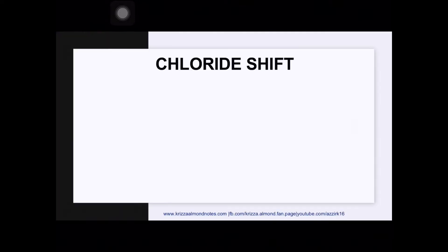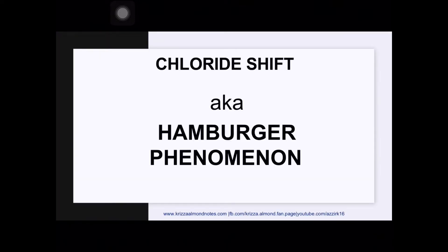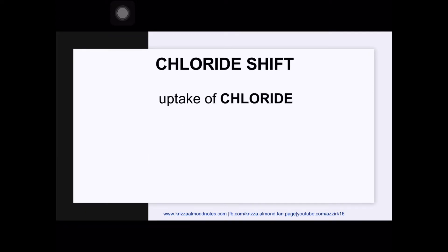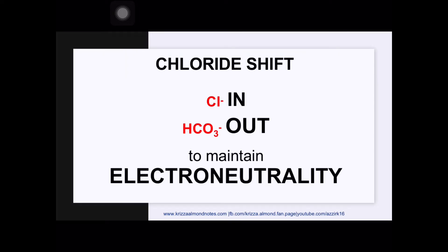Chloride shift is also known as the hamburger phenomenon. It refers to the uptake of chloride in exchange for bicarbonate and it happens in the red blood cells. Basically, it means that chloride comes in while bicarbonate goes out of the red blood cells to maintain the so-called electroneutrality.